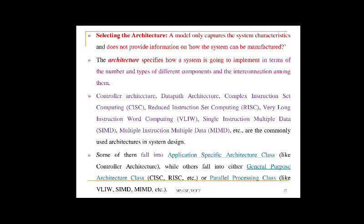The data path architecture is best suited for implementing the data flow graph model, where the output is generated as a result of predefined computations on input data. A data path represents a channel between input and output. The data path may contain registers, counters, register file memories, and ports along with high-speed arithmetic units. Ports connect the data path to multiple buses.